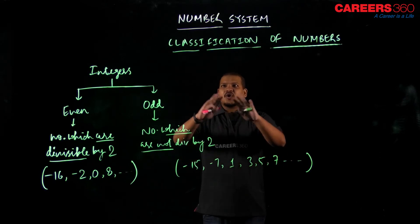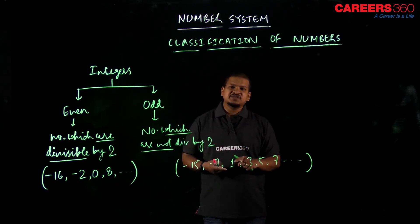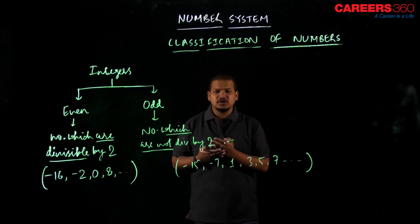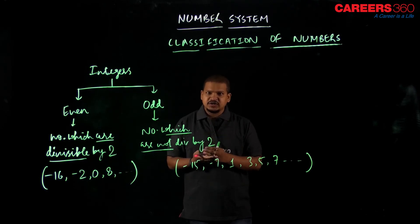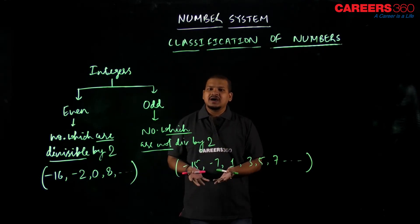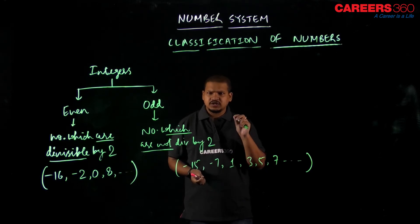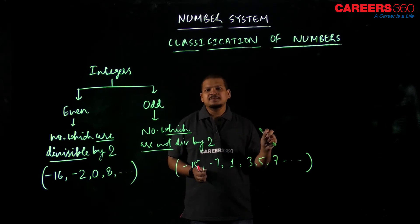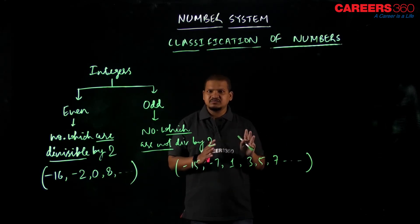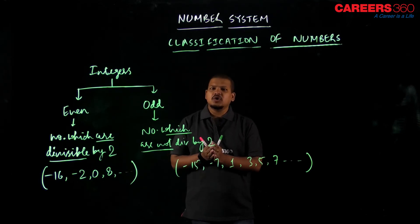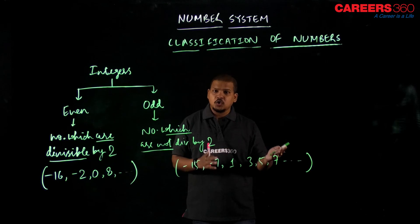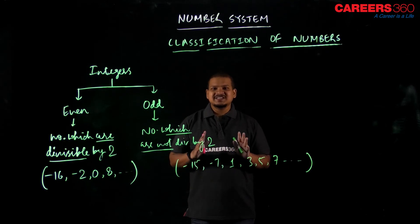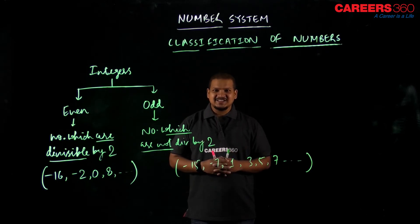That was all about the classification of numbers. We covered various types of numbers starting from natural numbers, then whole numbers, integers, rational, irrational, and together these form real numbers. We also discussed the real number line, introduced imaginary numbers, then looked at the bifurcation of natural numbers into prime, composite, and co-primes, and finally even and odd numbers. See you in the next class. Thank you.